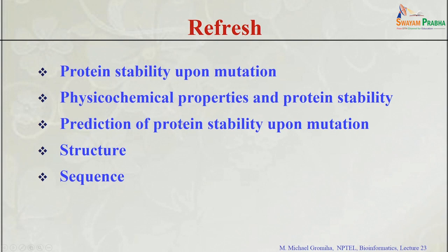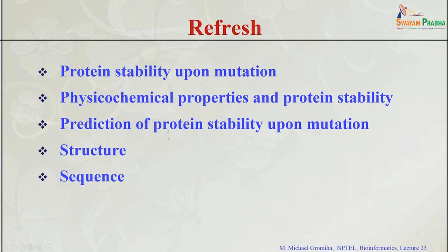We then tried to predict stability upon mutation and discussed various methods. One is the average assignment method, where we get values for all mutants — 380 combinations — and for new mutations you assign the value from a lookup table. We can then evaluate sensitivity, specificity, accuracy, and correlation. We also discussed inclusion of sequence or structure information with different neighboring residues, and two types of potentials: distance potentials and torsion potentials, combined to predict stability change.